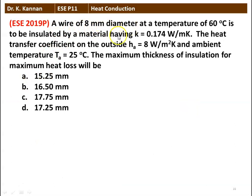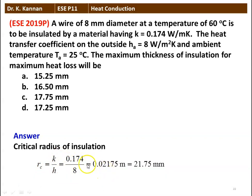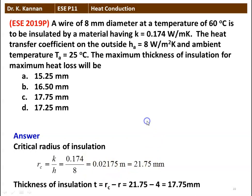Next question: a wire of 8 millimeter diameter at a temperature of 60 degree Celsius is to be insulated by a material of thermal conductivity 0.174 watts per meter Kelvin. The heat transfer coefficient on the outside H = 8 watts per meter square Kelvin and the ambient temperature is 25 degree Celsius. The maximum thickness of insulation for maximum heat loss will be: (A) 15.25 mm, (B) 16.5 mm, (C) 17.75 mm, (D) 17.25 mm. The critical radius RC = K / H = 0.174 / 8 = 0.02175 meter = 21.75 mm. Critical thickness = RC - R = 21.75 - 4 = 17.75 millimeter. The answer is 17.75 millimeter.